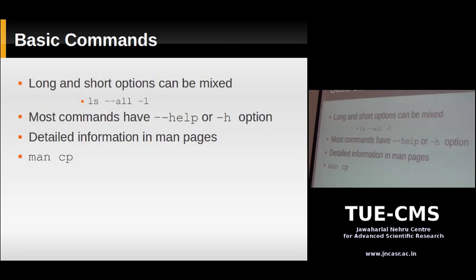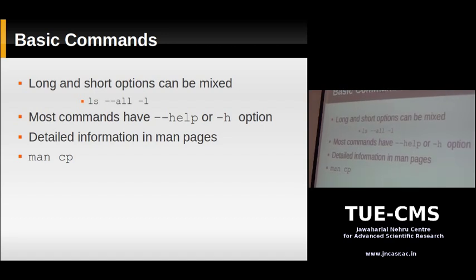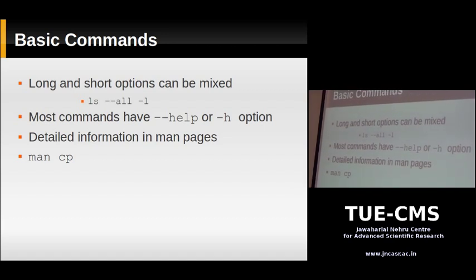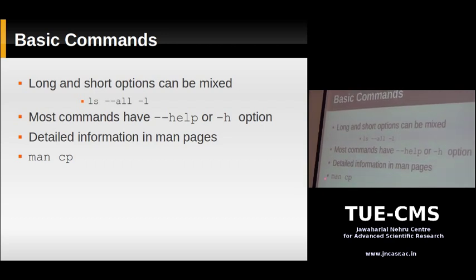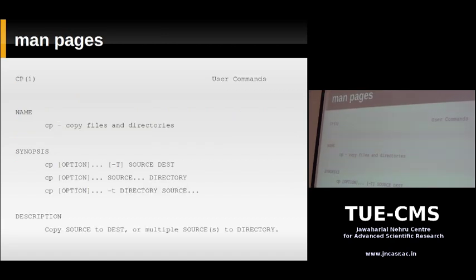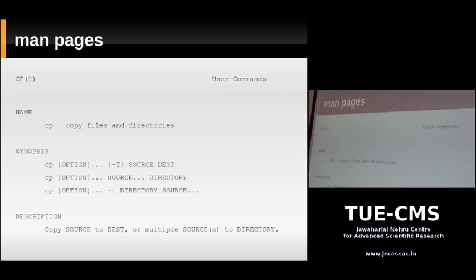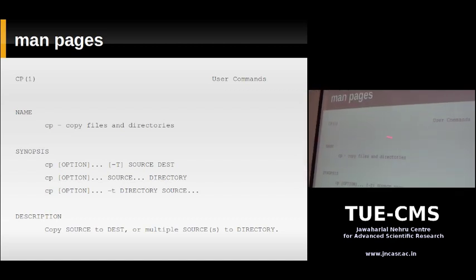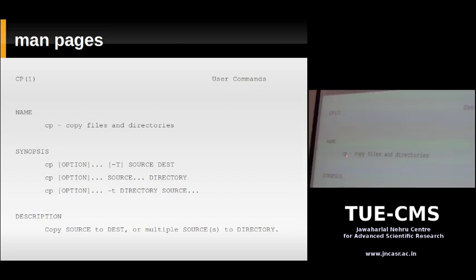For more detailed information about a command — what options it accepts, what parameters to pass — you refer to a man page. To access a man page, you type 'man' followed by the command name, for example 'man cp'. A man page is electronic documentation for commands — it's available on your computer, not on the internet. The first section is the NAME, giving a one-line summary: for 'cp', it says 'copy files and directories'. Then there's a SYNOPSIS section showing how to run that command.